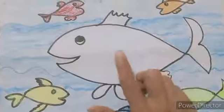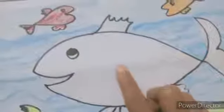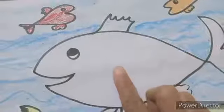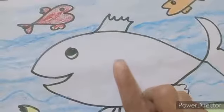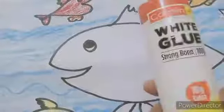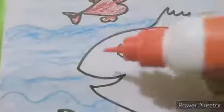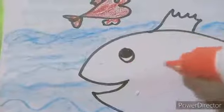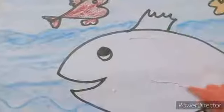Now we will paste some glitter color on this big fish. So for that, you need some glitter powder. Glitter powder and glue. So at the very first, we will apply glue here. Look at here, miss is applying some glue here.